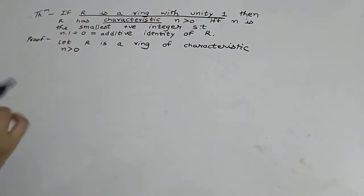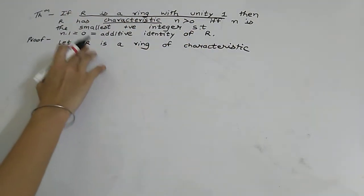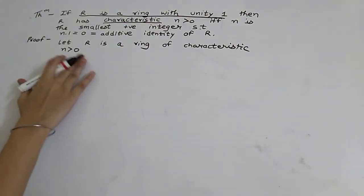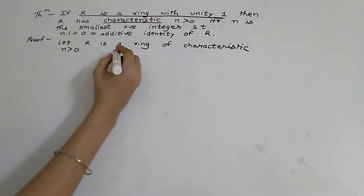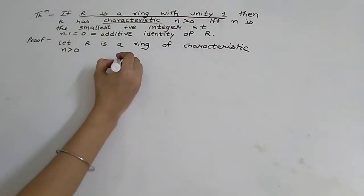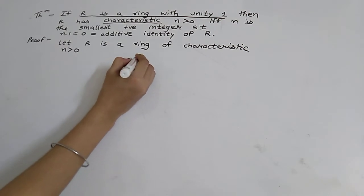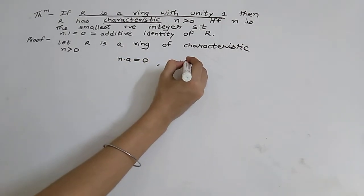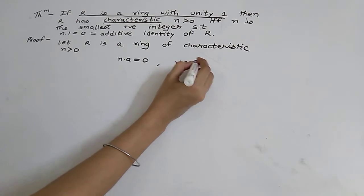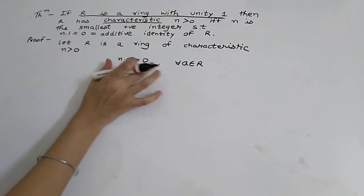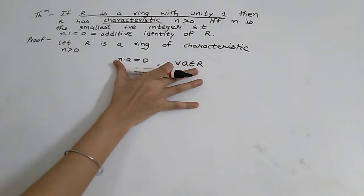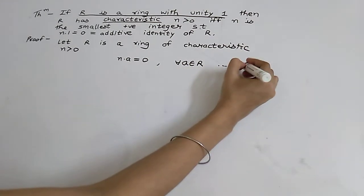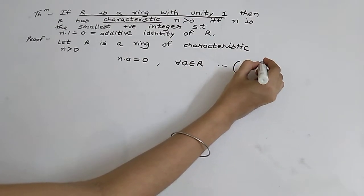Now we have to prove n is the smallest positive integer such that this condition holds. Since R is a ring of characteristic n greater than 0, we can write n into a is equal to 0 for all a belonging to R. This is from the definition of characteristic.